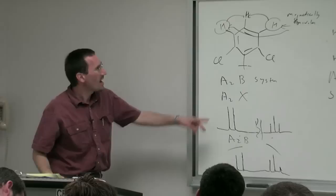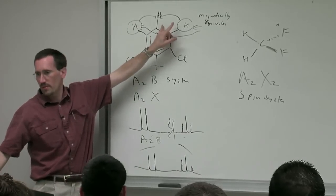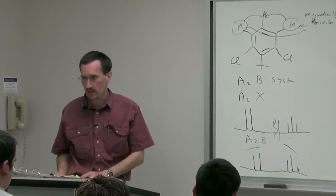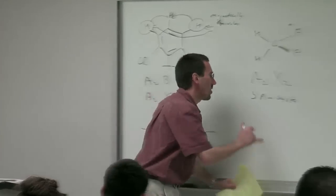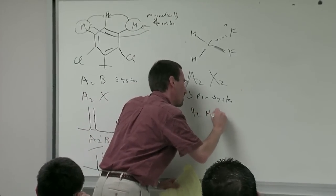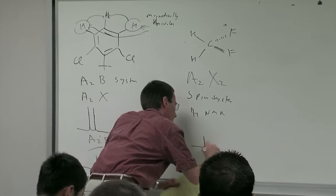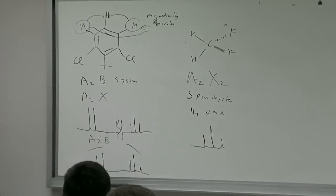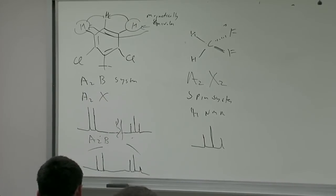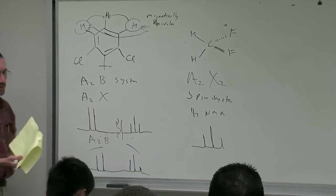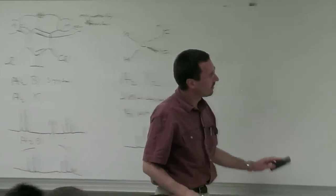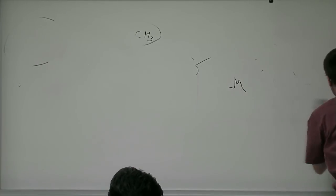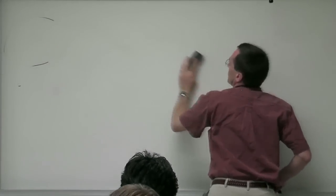If they're more than a few tenths of a PPM away we call them X; if there are two, X2. So the H NMR spectrum of difluoromethane would show up as a triplet, and likewise the F NMR.